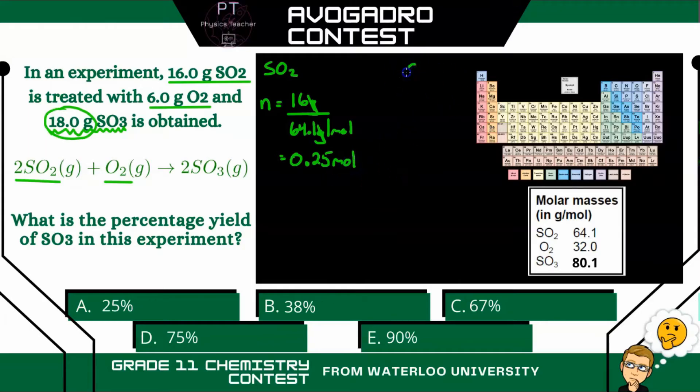All right, we can do the same thing for oxygen. So the number of moles for oxygen is, we have 6 grams, so 6 grams. Then we divide by its molar mass, which is 32 grams per mole, and we get 0.19 moles.